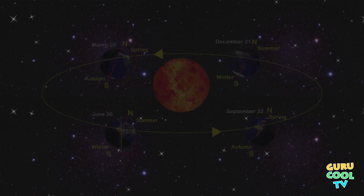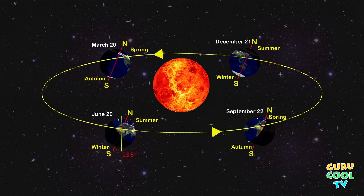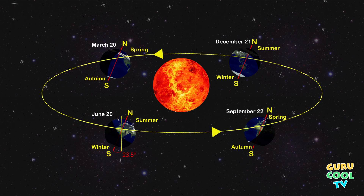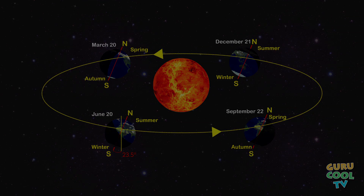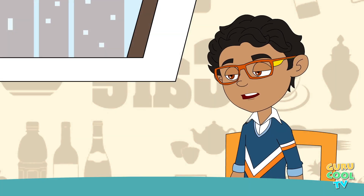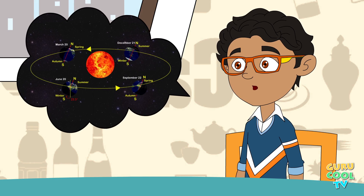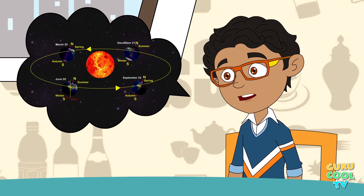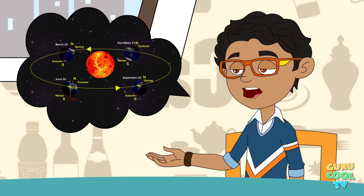This periodic phenomenon causes different seasons at different places at different times. So it's all about Earth's tilt and its revolution around the Sun.